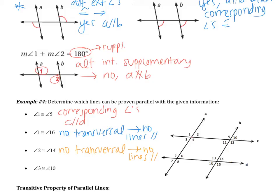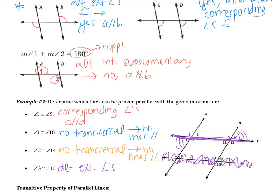The last one: angles 3 and 10. Hopefully you notice that they both touch line C — that means line C is my transversal. If line C is my transversal, I can ignore D altogether. With C as my transversal, I notice that 3 and 10 are alternate exterior angles. That proves that A is parallel to B.